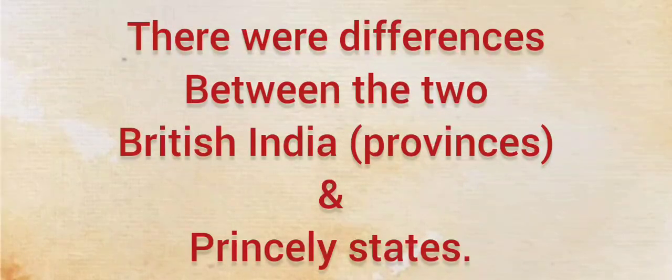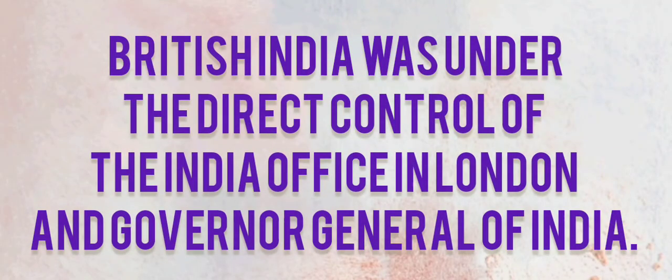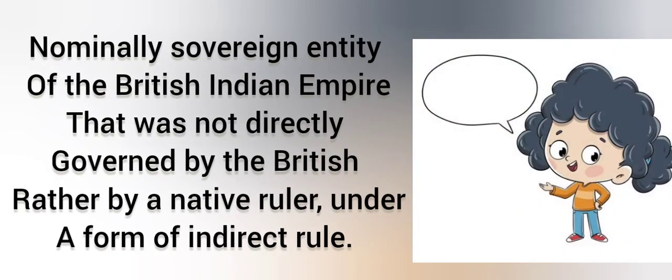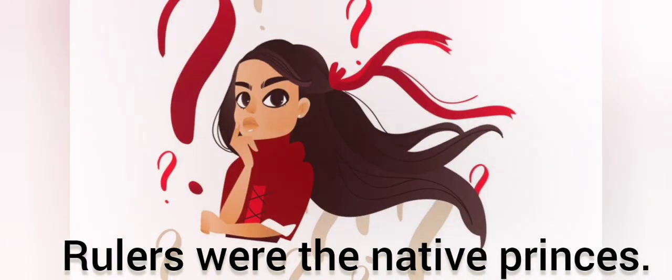There were differences between British India and princely states. British India was under the direct control of the India Office in London and the Governor General of India — that means British India was directly controlled by the British government. Everything in British India was under the British government. But in princely states, there was no such direct control.